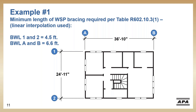One interesting thing here is that the shorter walls actually require more bracing. This applies to wind-controlled houses. If you think about wind acting on the south wall — that's a longer wall with more area and a greater wind load — that wind load is actually resisted by the perpendicular walls. So the wind load acting on the longer walls is resisted by the shorter perpendicular walls. That's why your shorter walls actually require more bracing when you're looking at wind.